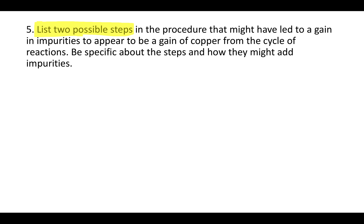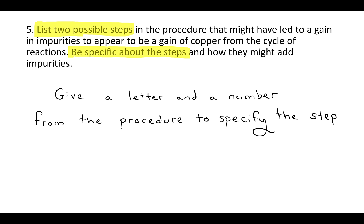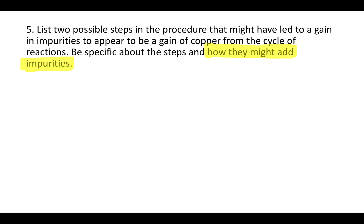Question 5 says: list two possible steps in the procedure that might have led to a gain in impurities, to appear to be a gain of copper from the cycle of reactions. Be specific about the steps and how they might add impurities. Make sure you list both steps, giving a letter for the section of the procedure and a number for the step in that section where you could have gained impurities. Then say how you might have added the impurities and where they would have come from.